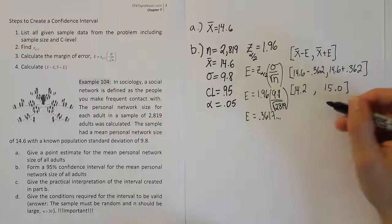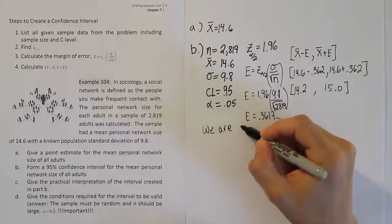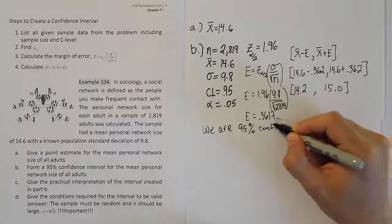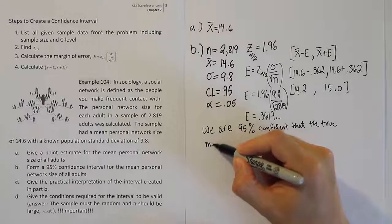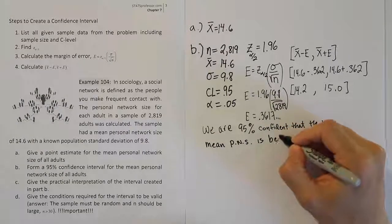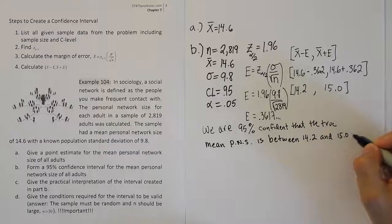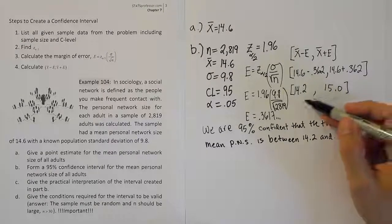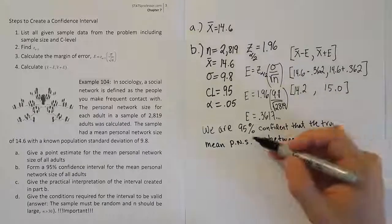There's your interval. From there, we want to give a statement about what this interval is doing for us. We are 95% confident that the true mean personal network size for all adults is between 14.2 and 15.0. We believe that the personal network size, the true average personal network size for adults, is between these two values. That's very vital to remember: we think the population mean is one of the numbers inside the interval here. We're 95% confident of that.